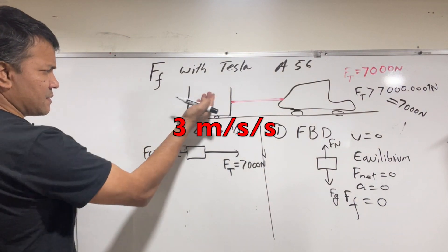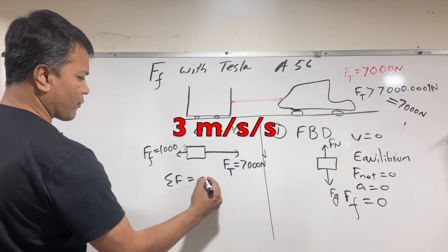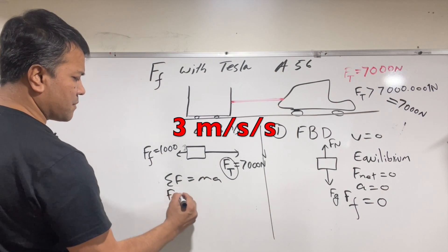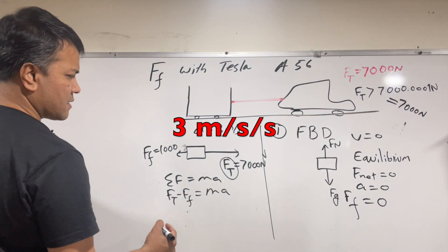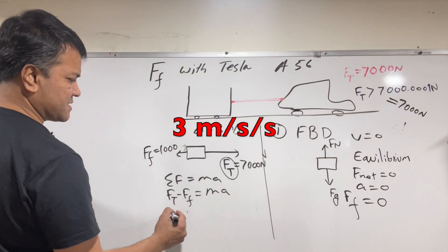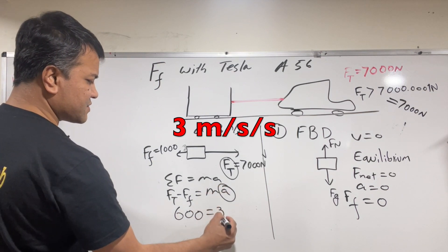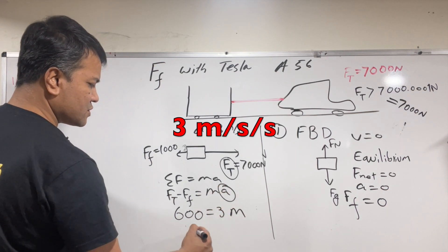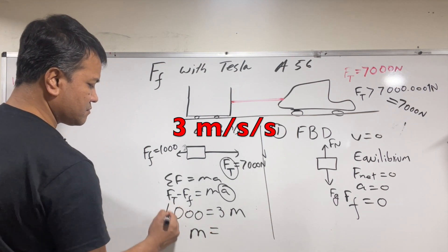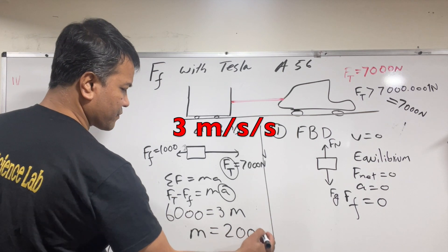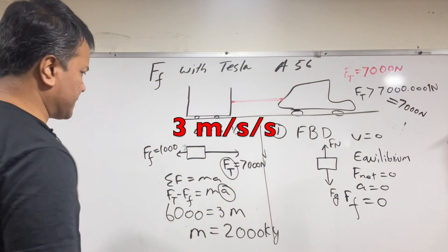F equals ma. Ft minus Ff is equal to ma, so 7000 minus 1000 which is 6000 is equal to acceleration is 3 m/s/s. So m is equal to 6000 divided by 3, m is equal to 2000 kilograms. So this car is 2000 kilograms.